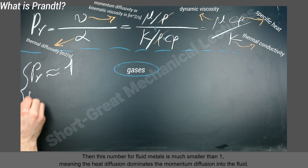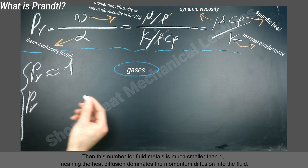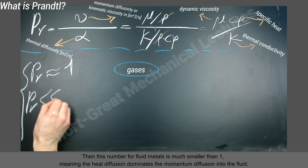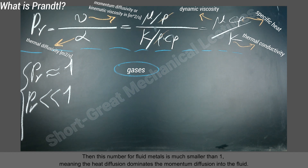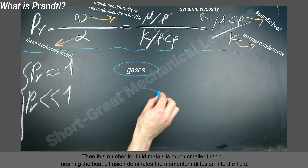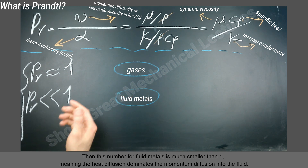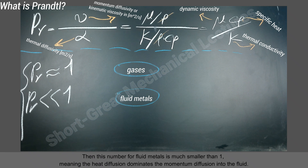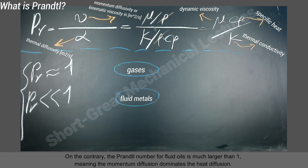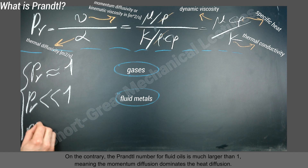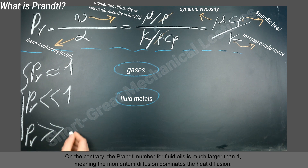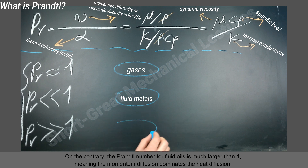The Prandtl number for liquid metals is much smaller than 1, meaning heat diffusion dominates momentum diffusion into the fluid. On the contrary, the Prandtl number for fluid oils is much larger than 1, meaning momentum diffusion dominates heat diffusion.